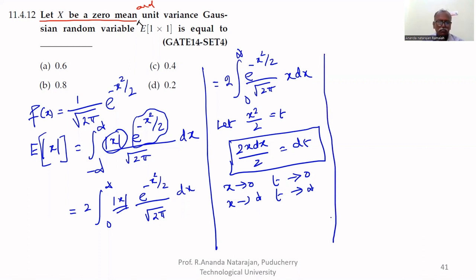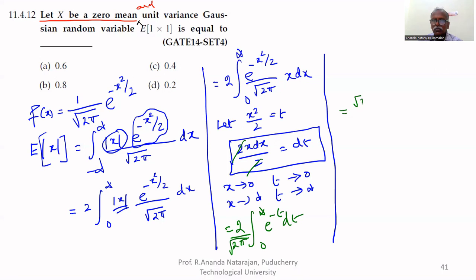Therefore, this integration becomes 2 times the integral from 0 to infinity of e to the power of minus t dt, divided by square root of 2 pi. Evaluating the integral: the integral of e to the power of minus t equals minus e to the power of minus t, with limits from 0 to infinity.